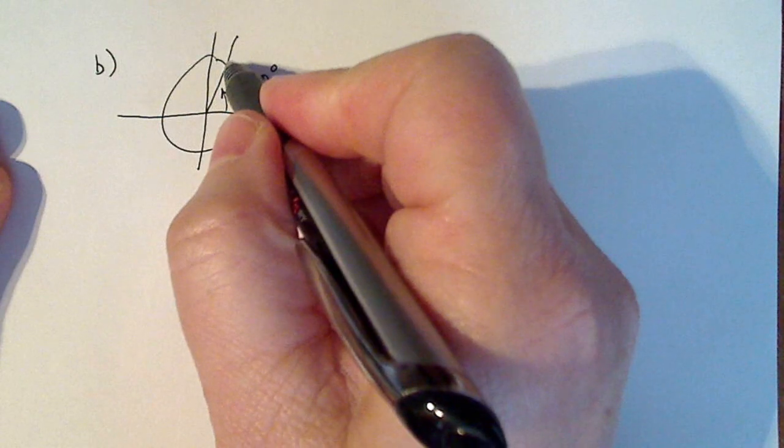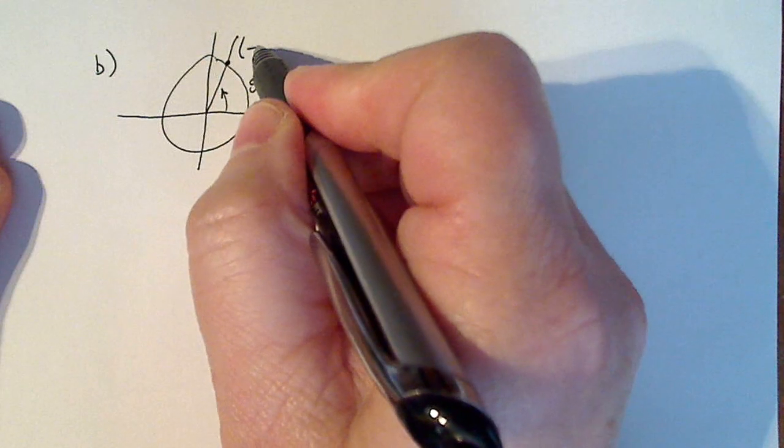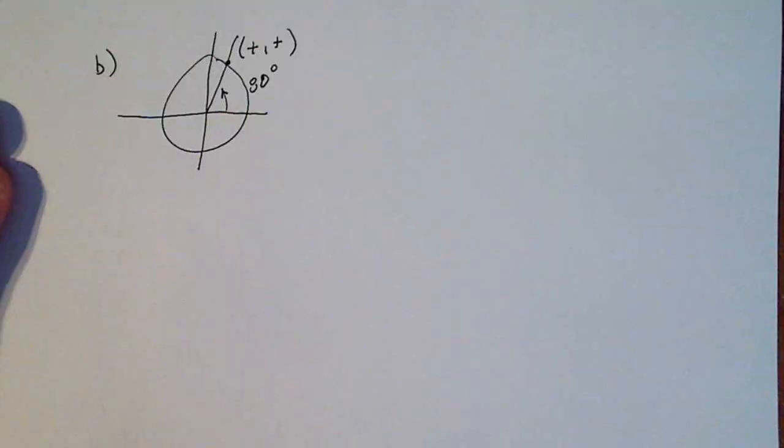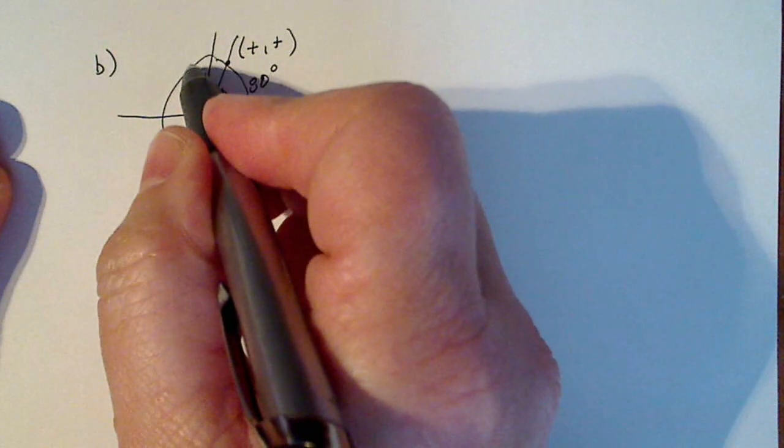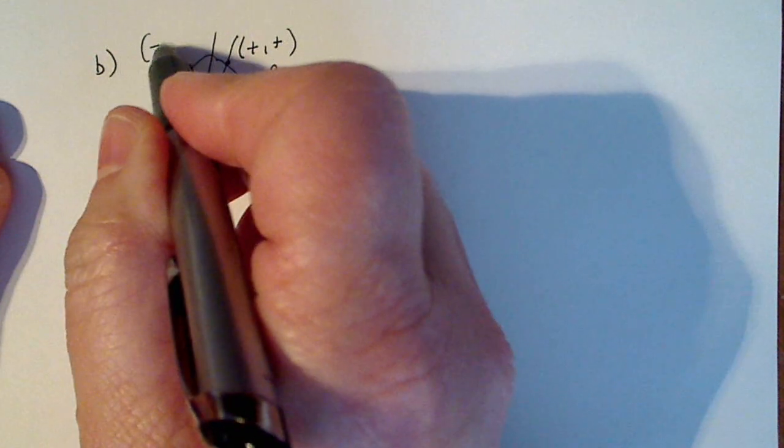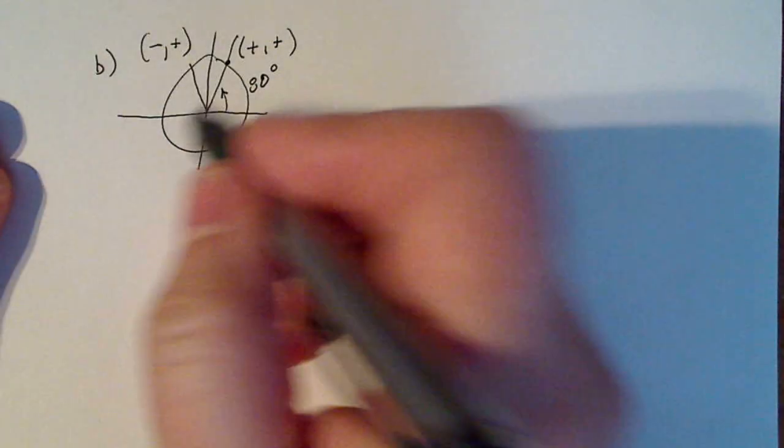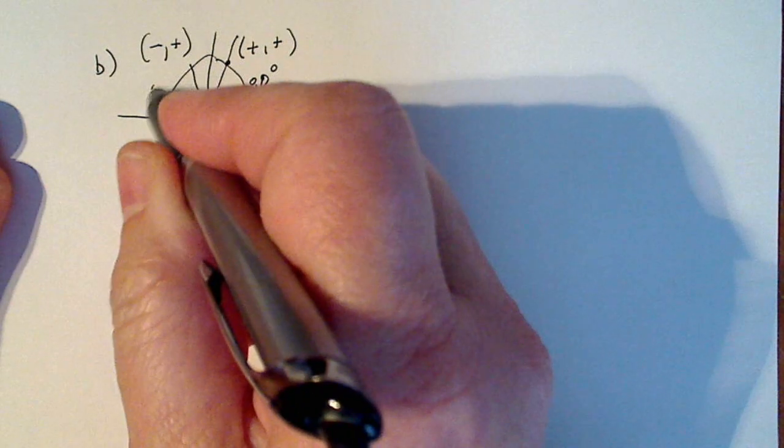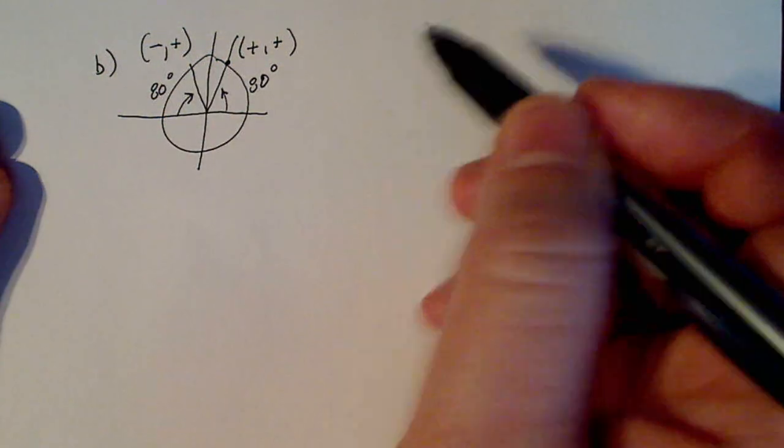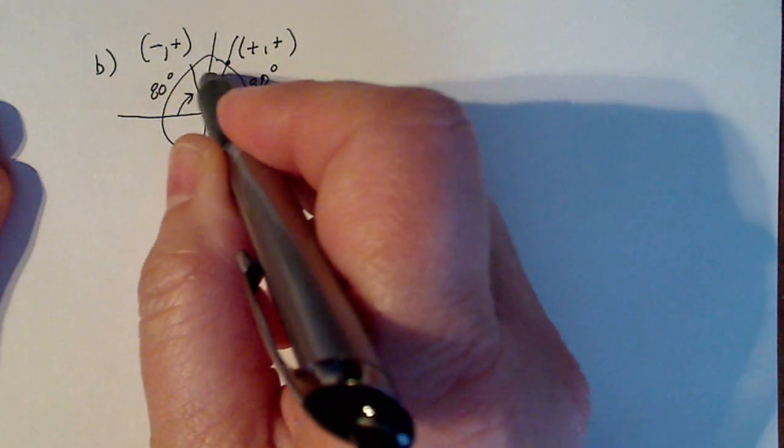And I do know that both the sine and cosine in this quadrant are positive. And I know that in this quadrant, the sine is also positive. So that's the quadrant angle that I'm looking for. My reference angle is 80 degrees. So I'm really looking for this angle right here.